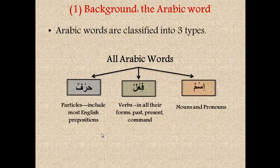Just know for now that a harf — this group includes most English prepositions. So things like from, to, with, about will fall under this category of harf. We will discuss these two groups in a lot of detail in the upcoming lessons. But in this lesson we will hone in and focus on the ism — not so much pronouns, but just nouns in general.